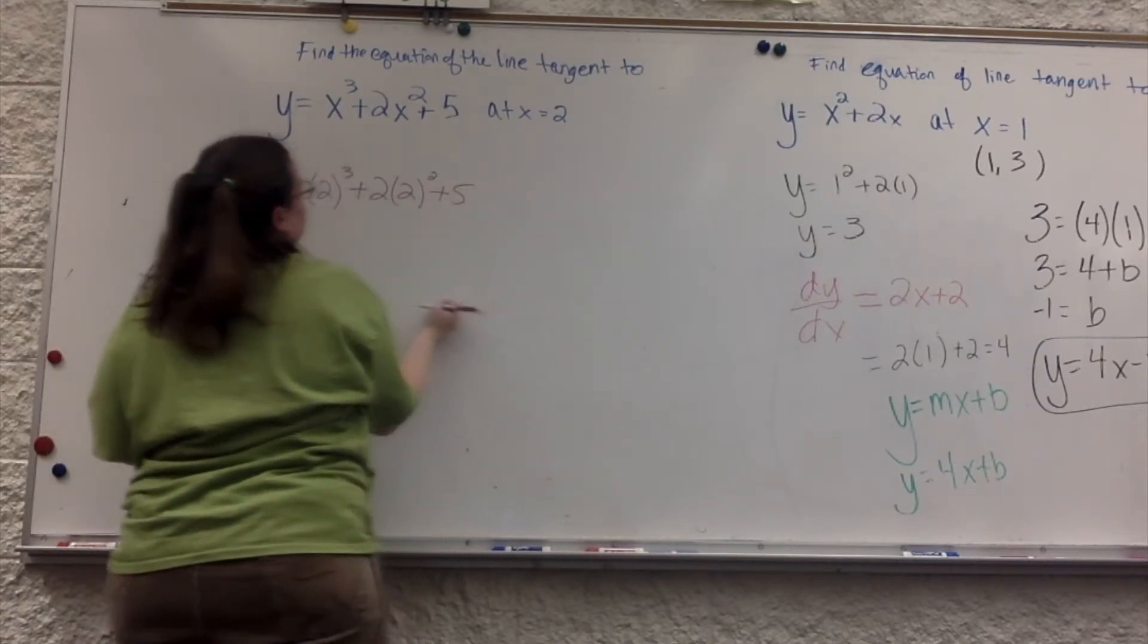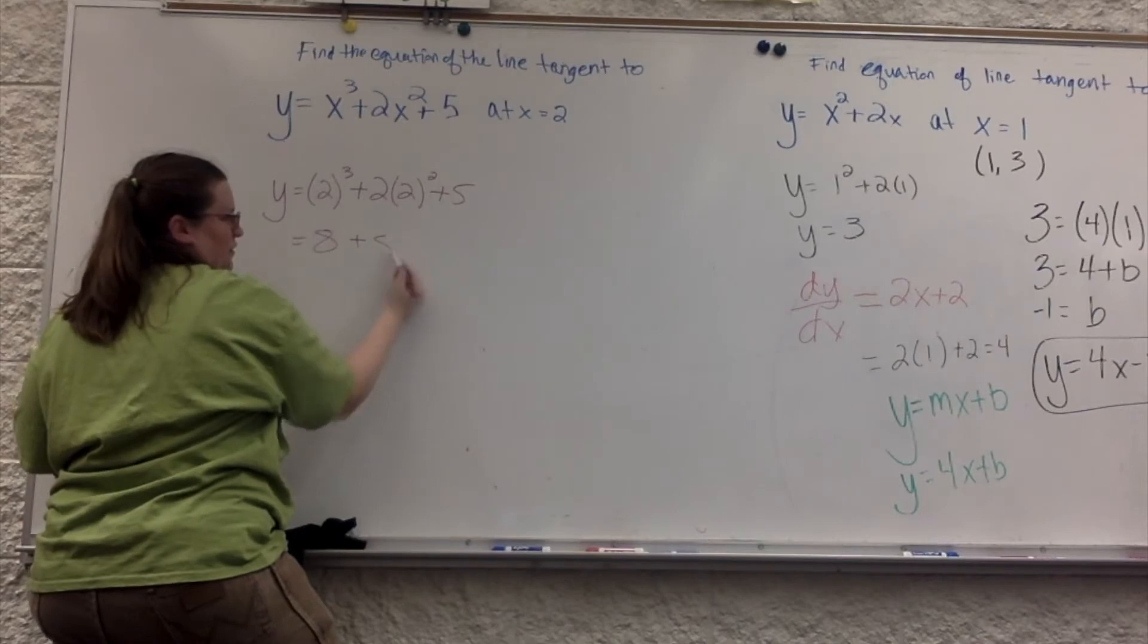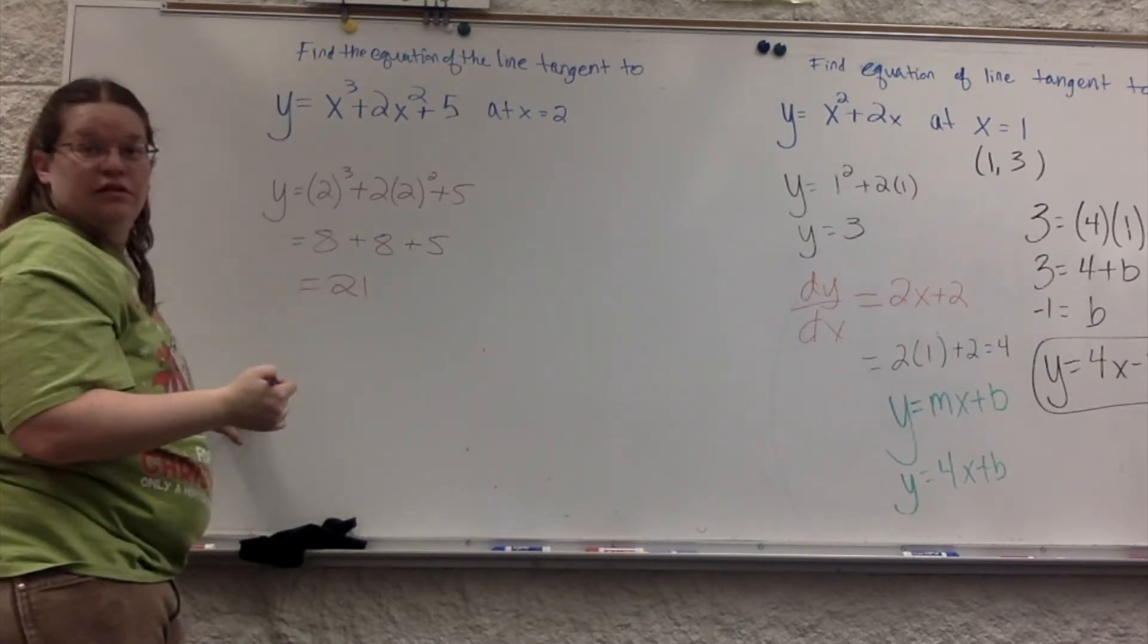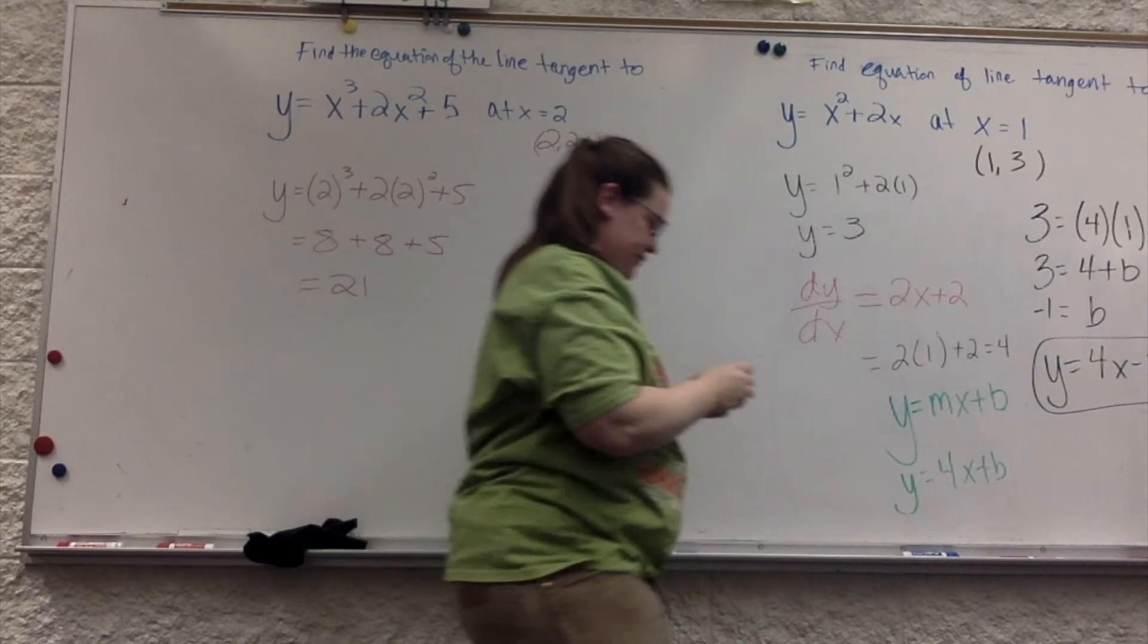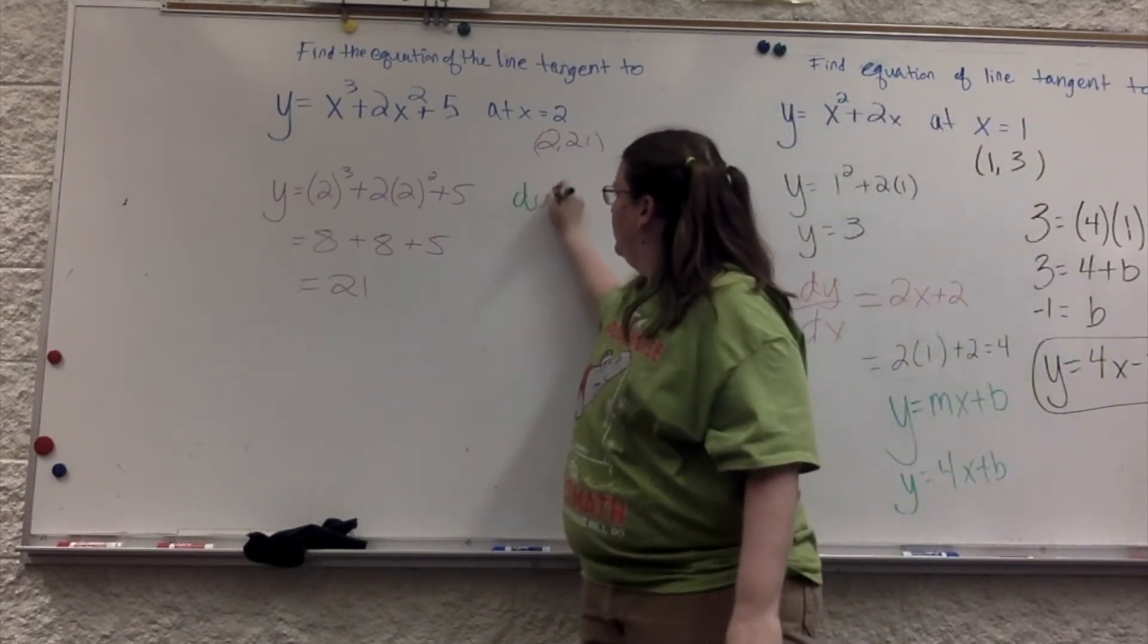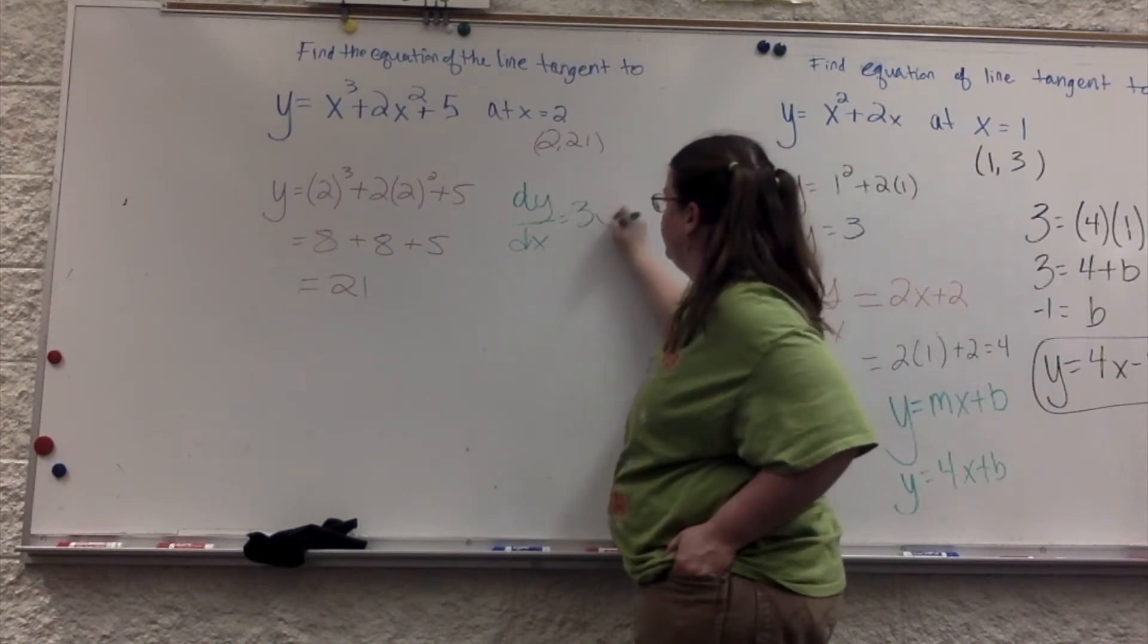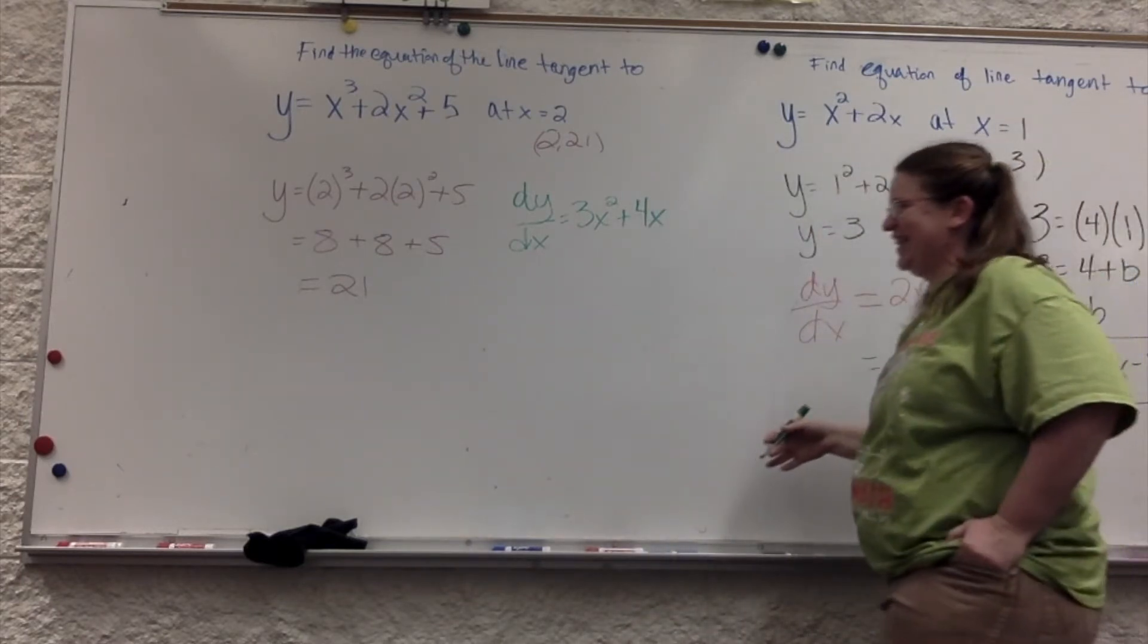So, then, we have a new example. So the ordered pair is 2, 21. What questions do you have about that? So now we're going to do the derivative. Because doing the derivative is what? It's going to give us the slope. What is the derivative? 3x squared plus 4x.